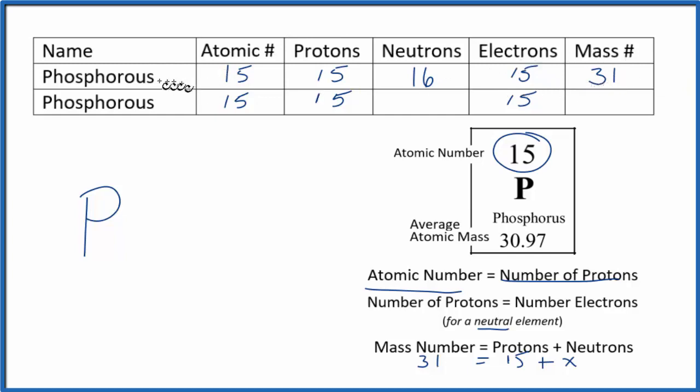We name it phosphorus-31 based on its mass number. Almost all of the phosphorus, if you had a block of phosphorus, would be this isotope of phosphorus with just 16 neutrons.